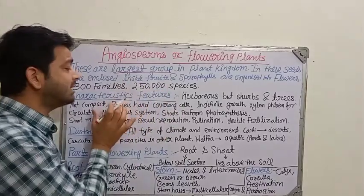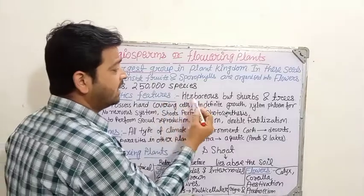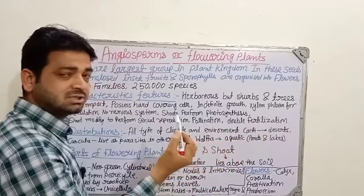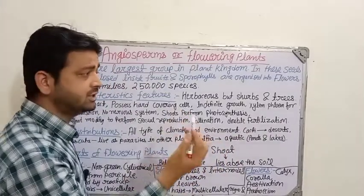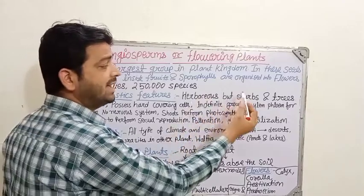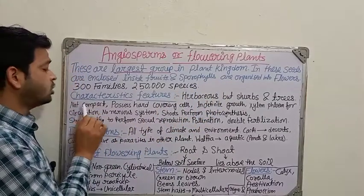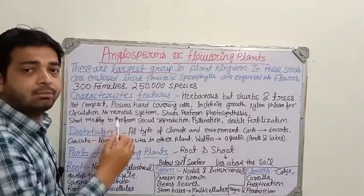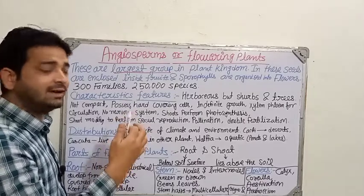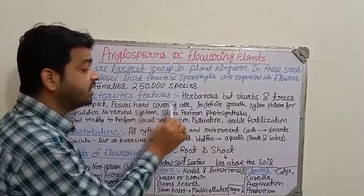Let us discuss what are the characteristic features of flowering plants. They are herbaceous — herbs, shrubs, and trees. For example, mango is a tree, while herbs and shrubs are also there. They are not compact, not complex like animal bodies which have liver, respiratory systems, digestive tracts, and so on.